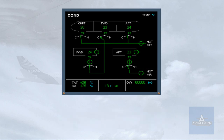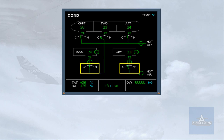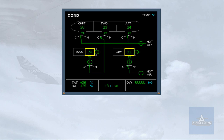On the ECAM conditioning page, the indications associated with the cargo compartments are: the isolation valves, the trim air valves, the duct inlet temperature, the compartment temperature, and the aft cargo hot air valve. Notice that there are no indications for the extractor fans.